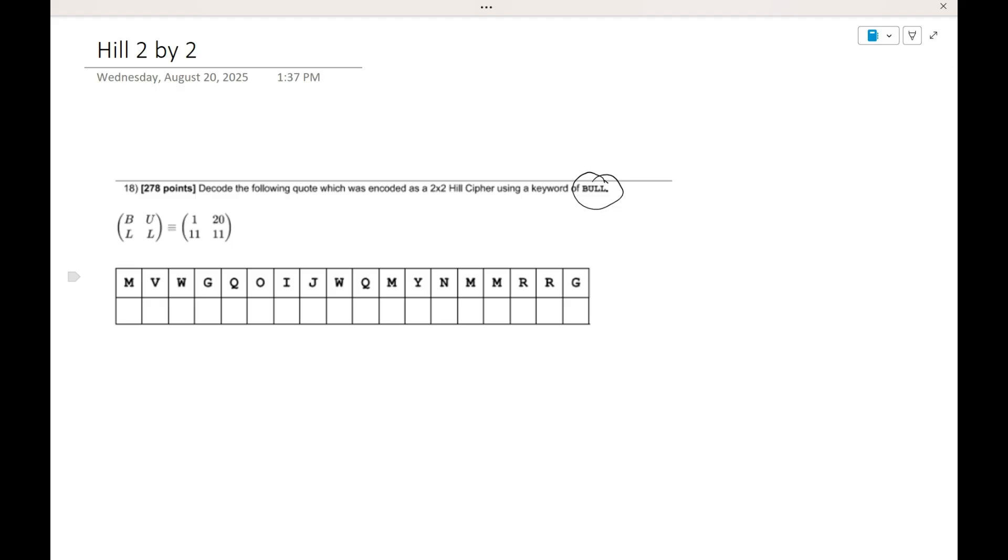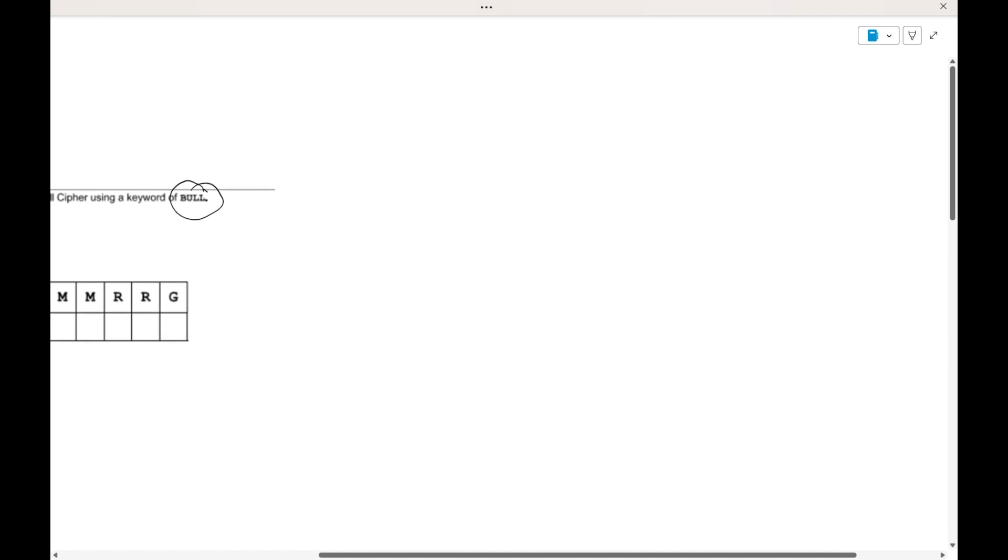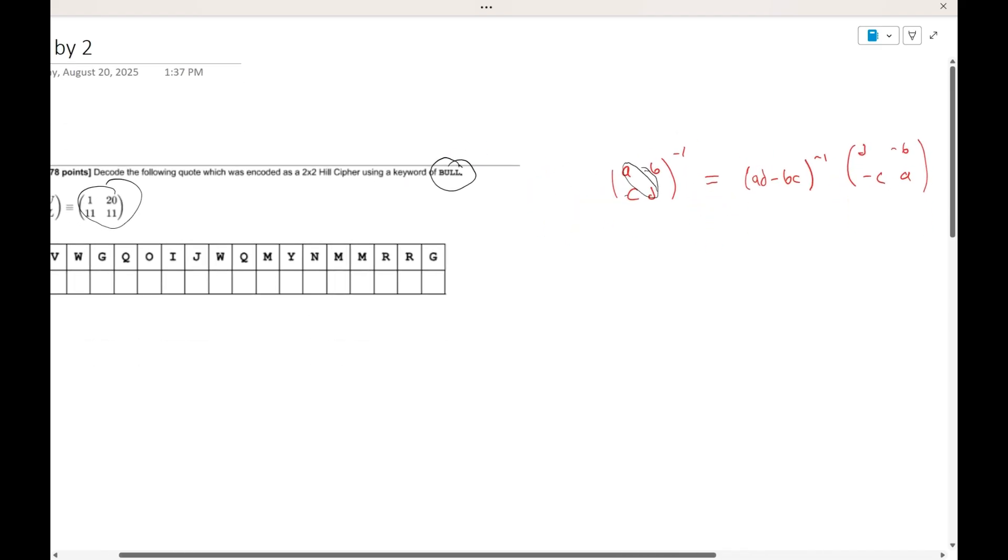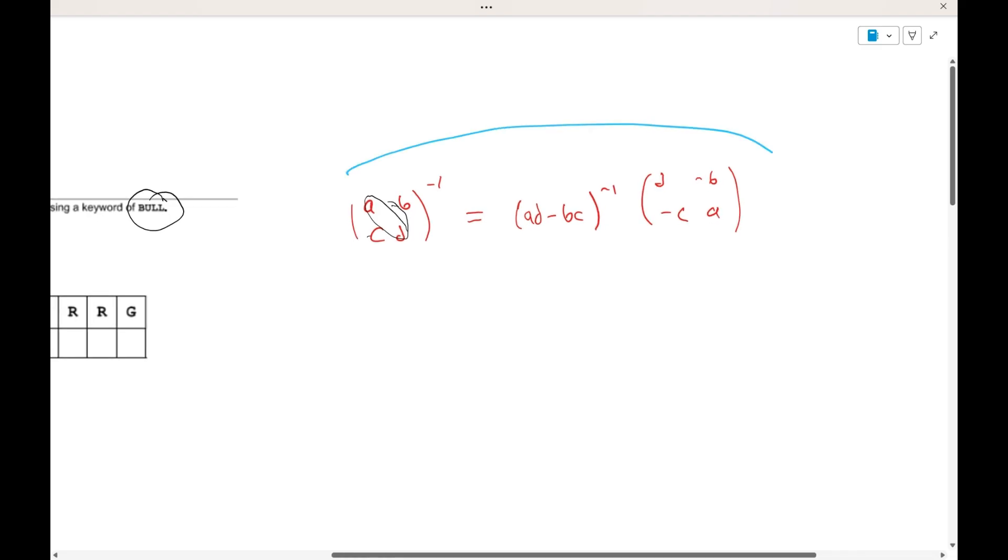So the first thing that you need to do is get the inverse of this matrix. Now if you don't know how to do that, there's a very simple formula, and this is probably the only formula that you need to remember: a, b, c, d, the inverse of this is equal to the determinant, which is a times d minus b times c, times we're going to go d, minus b, minus c, and a. So if you notice, we essentially just flip these two, and then turn both of these as negative.